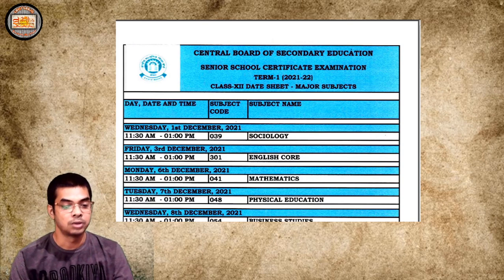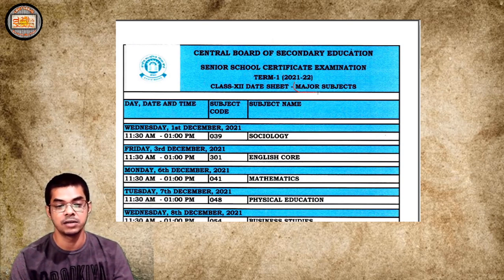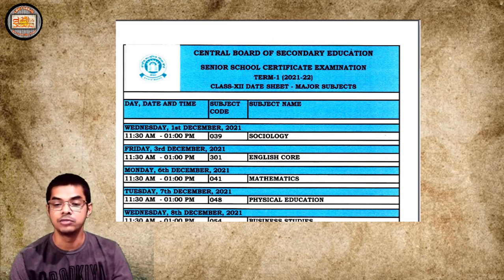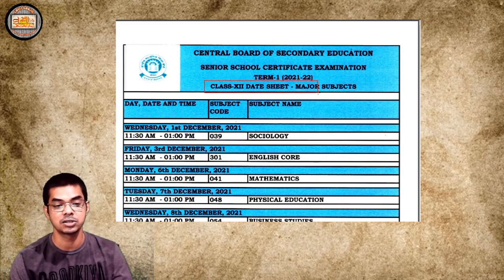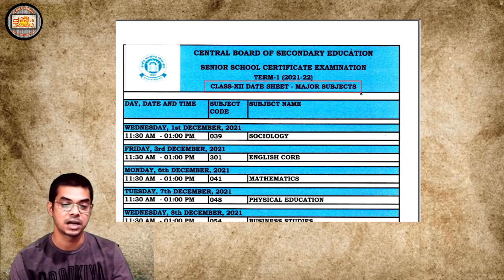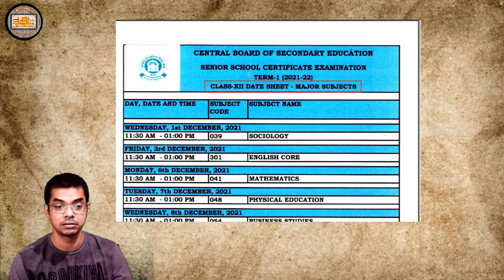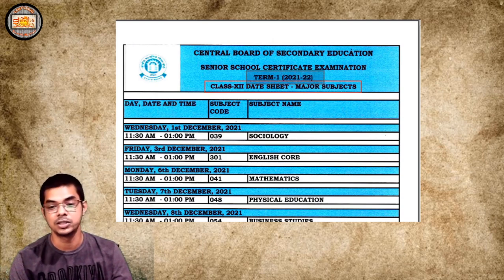It's about major subjects. You also have your minor subjects, and to find out the major subjects and the minor subjects you have to visit the CBSE website, where you'll get the full list. This is the Class 12 date sheet for major subjects of the Central Board of Secondary Education Senior School Certificate Examination — Term 1 of 2021-22.